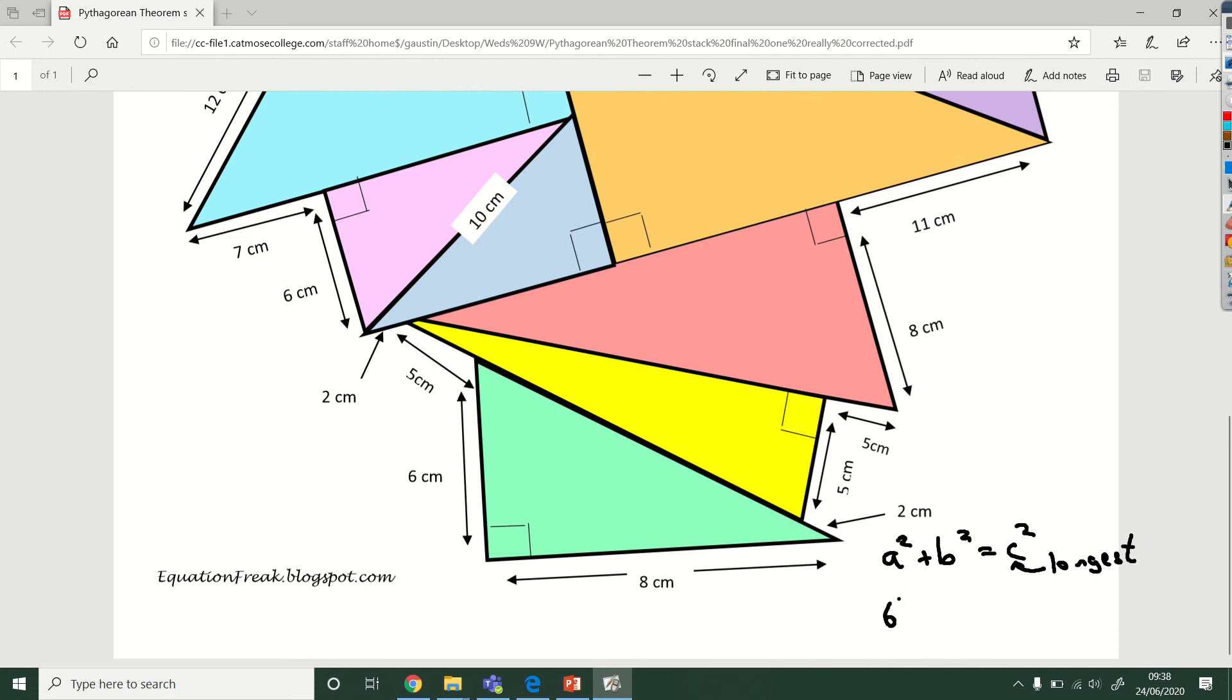Now if you square and add these things together you get 36 plus 64 is c squared. What's this? This is 100, so c squared is 100. But then to figure out what c is you need to square root, because it's what squares to make 100, so c is 10. I'll write that over here. So the side that goes from here to here is worth 10. That's going to help us get up to the next bit.